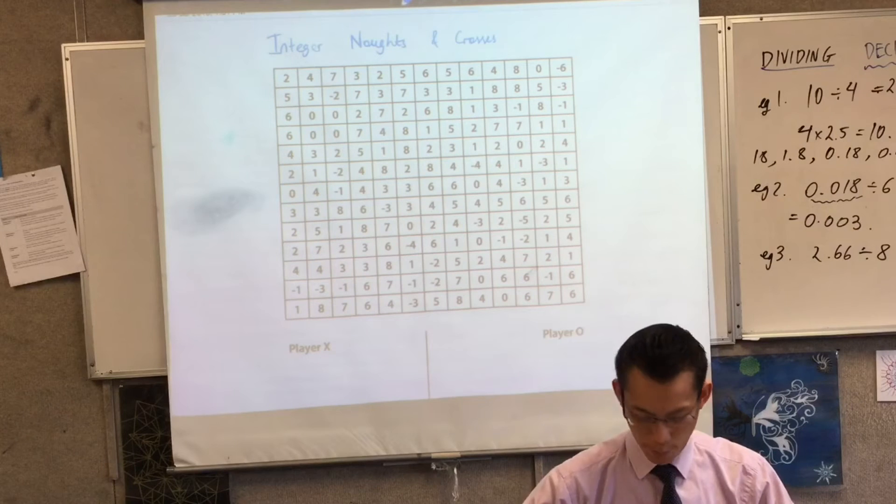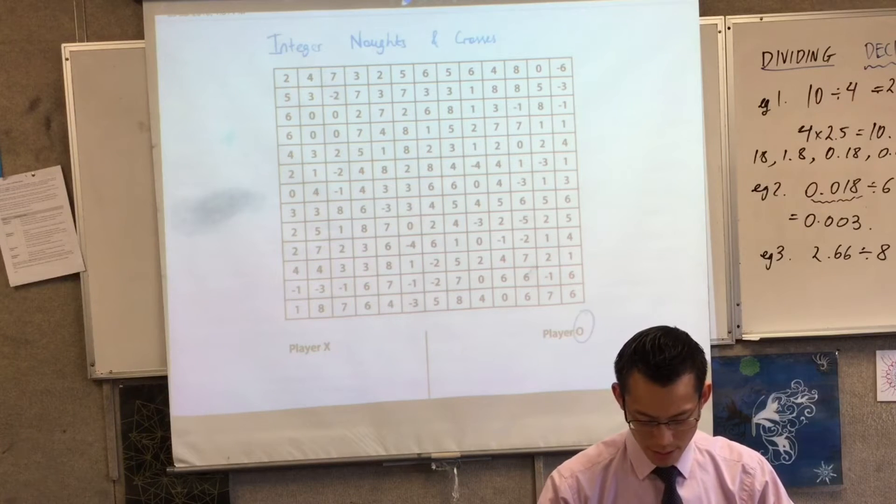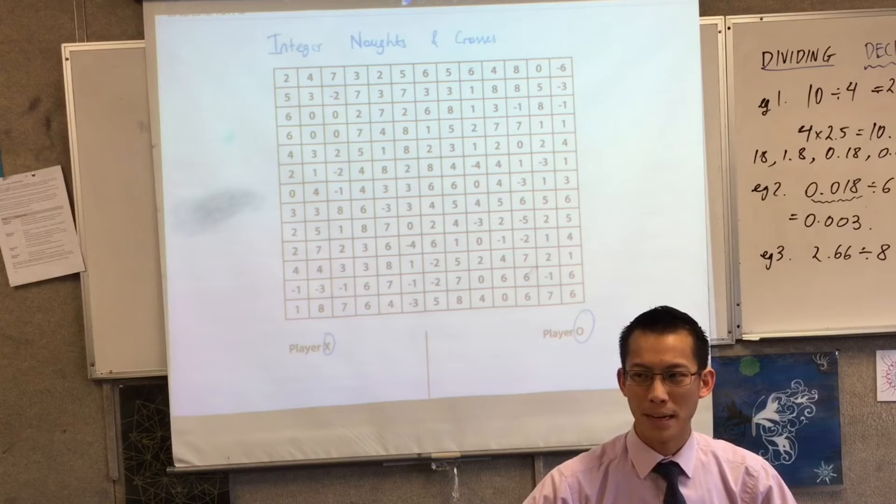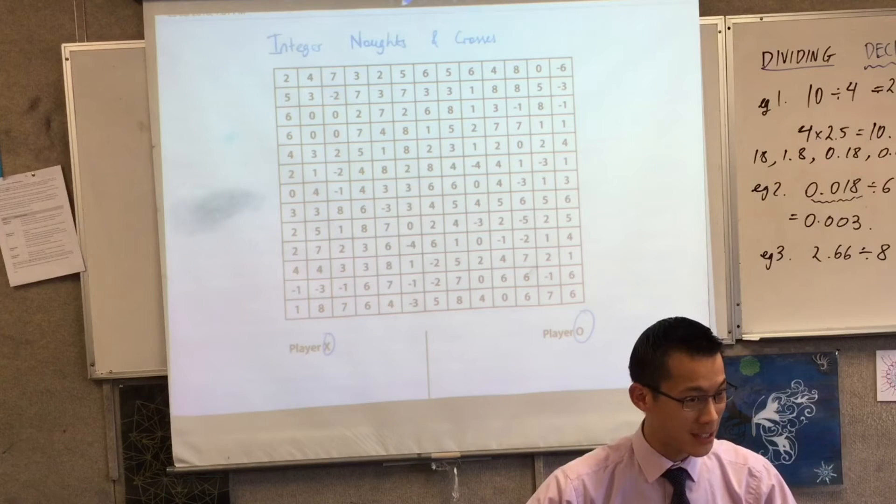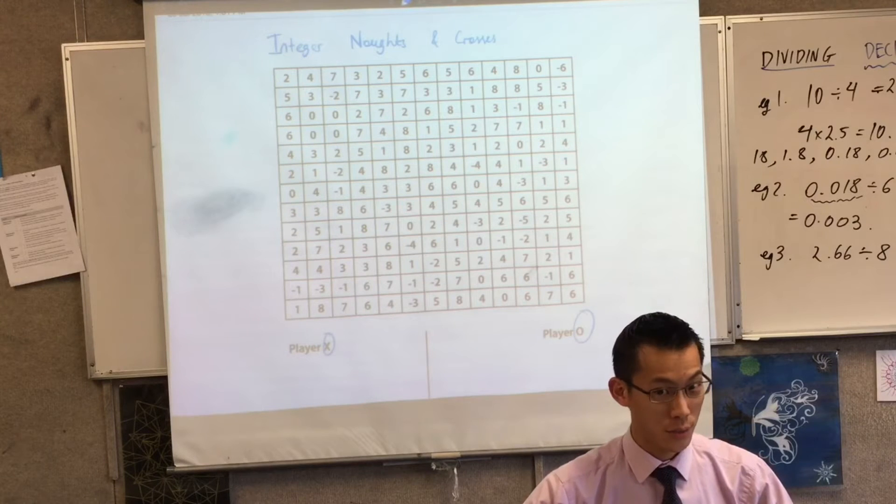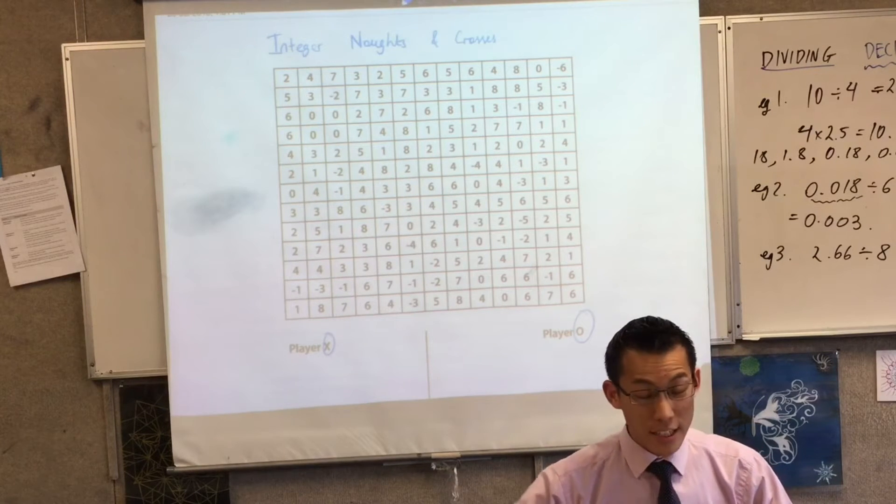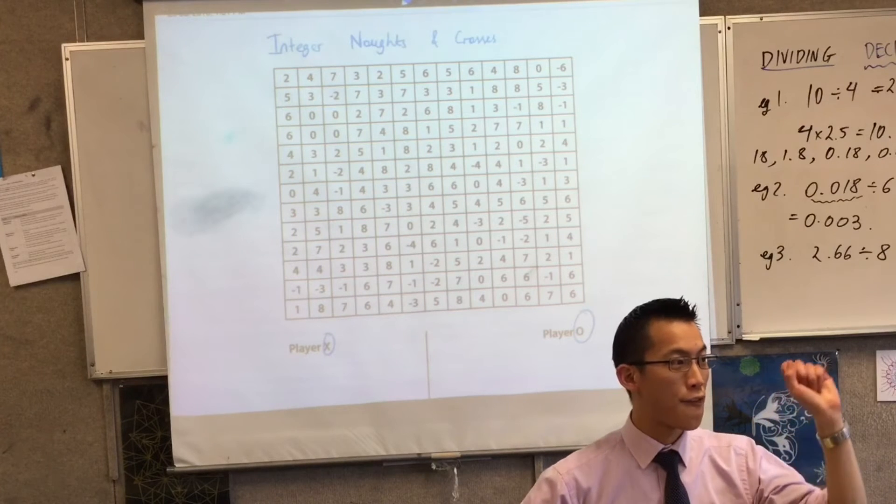Now, you've all played Noughts and Crosses before. There's going to be someone who has the Noughts and someone who has the Crosses. But this game has rather a few twists to it. First twist: Noughts and Crosses, you usually need three in a row. For Integer Noughts and Crosses, you need five in a row.